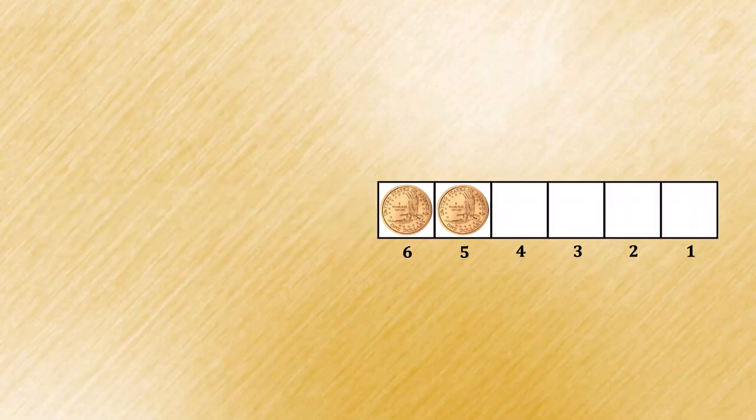From this position, your opponent only has a couple of different types of moves. For one, they could place a coin on square 3 or square 4.